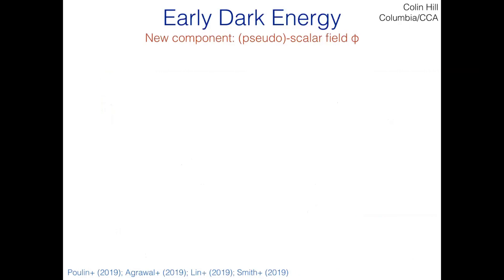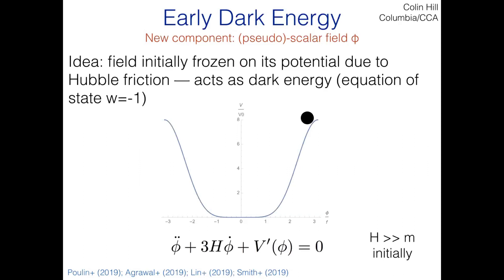In a scenario like early dark energy, you get additional flexibility because you have a new set of parameters that enter the calculation of the physical sound horizon Rs*. In our case, three additional new parameters are relevant. The simplest way, as is often the case with new physics, is to introduce a scalar field — in this case a pseudoscalar field phi. It lives in some potential, and the idea is that it's initially frozen on its potential due to Hubble friction. The equation of motion for a scalar field in an expanding universe: if the Hubble parameter is much larger than the mass of the field, the damping term dominates and you have a very highly damped harmonic oscillator — so it just sits there.